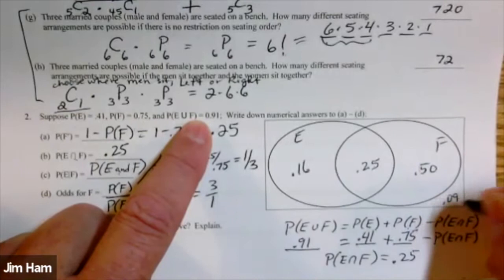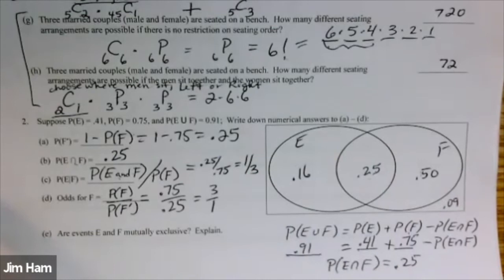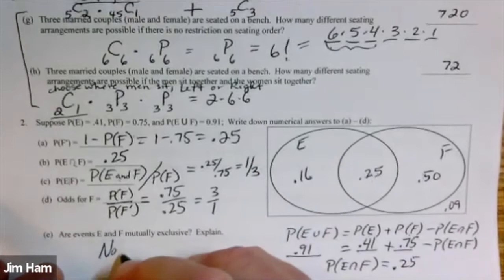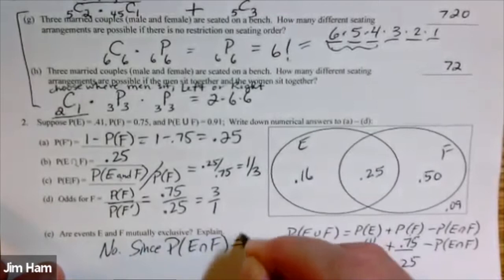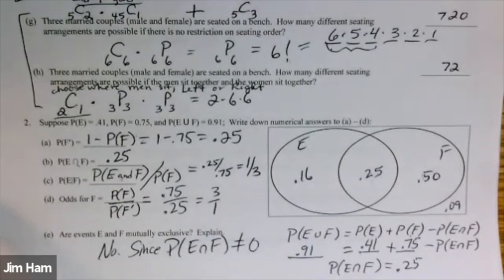Mutually exclusive? No — since the probability of E intersect F is not equal to zero. In order for two events to be mutually exclusive, there can't be anything in their intersection — they have to be completely separate circles with nothing in the intersection.